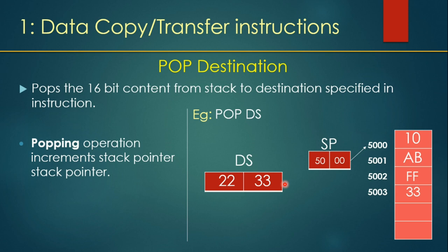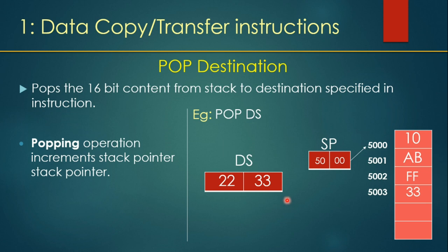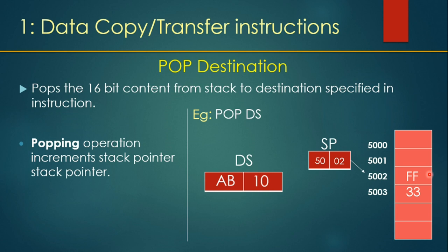Exactly the opposite takes place with the POP instruction. POP takes out the last-pushed data from the stack memory and puts it into the register specified in the instruction. In the example, POP DS will take the 16-bit data — that is 10AB — from the stack memory and put it into DS. DS currently has 2233 and that data will be lost when the instruction is executed. After execution, the stack pointer is incremented and points back to FF, the topmost remaining data.